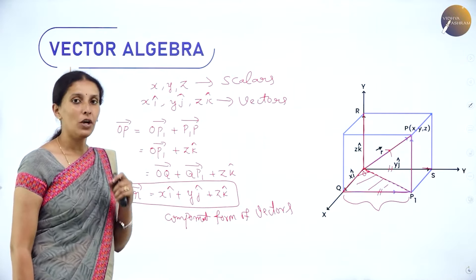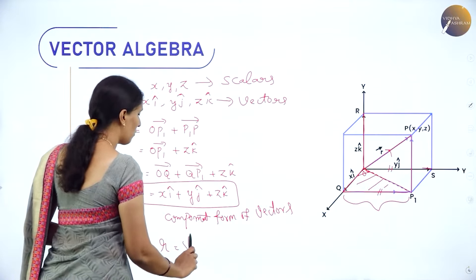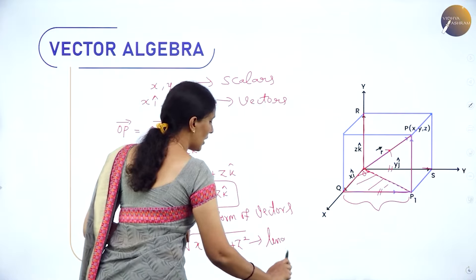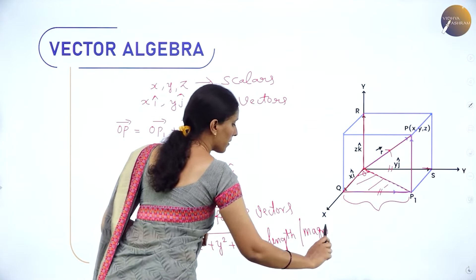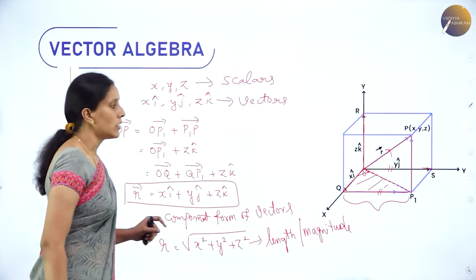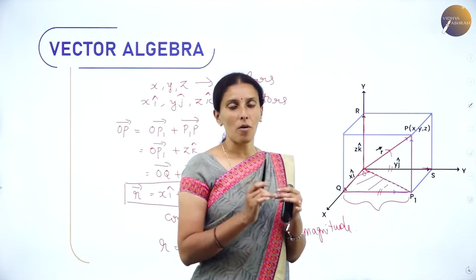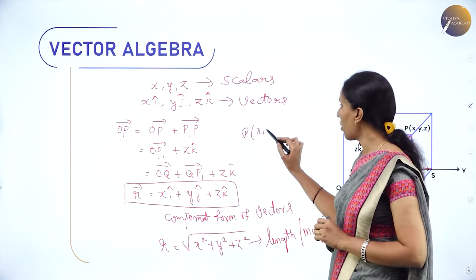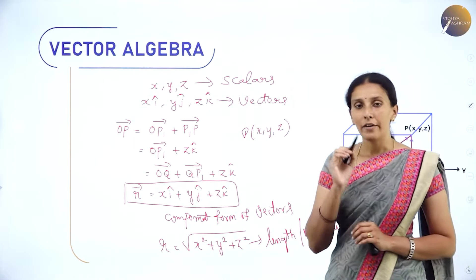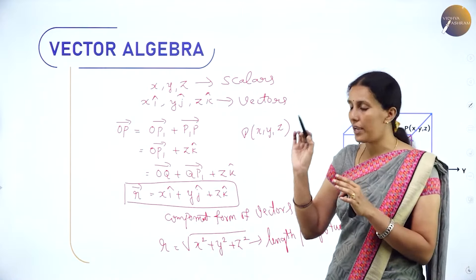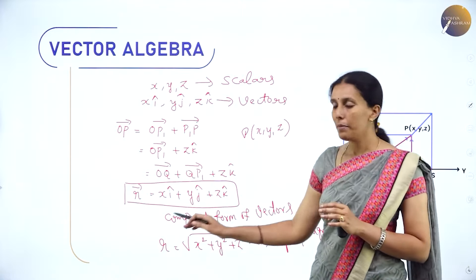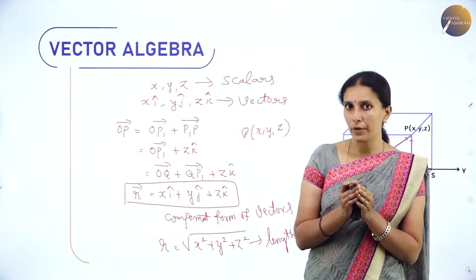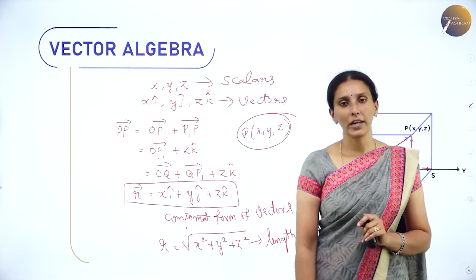To calculate the magnitude of the vector, R = √(x²+y²+z²). This is the length or magnitude of the vector, same as the position vector formula. A vector can be expressed either in component form xî+yĵ+zk̂ or in coordinate system form as P(x, y, z), where x, y, z represent the distances from the x-axis, y-axis, and z-axis to point P.